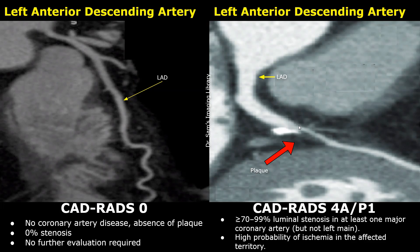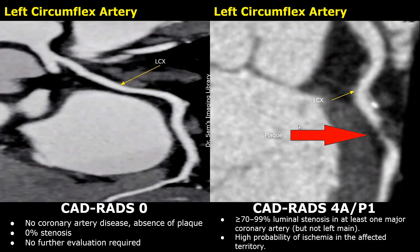This plaque is present in the left circumflex artery. The stenosis seems to be between 70% and 99%. This was a CADRADS-4A P1 lesion.